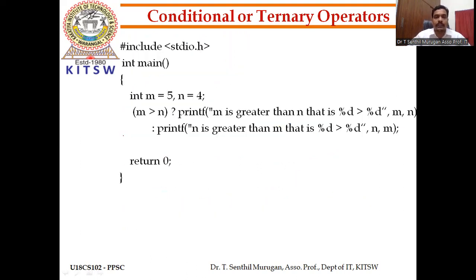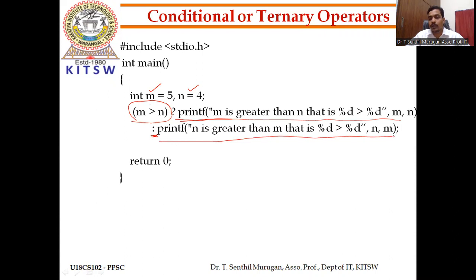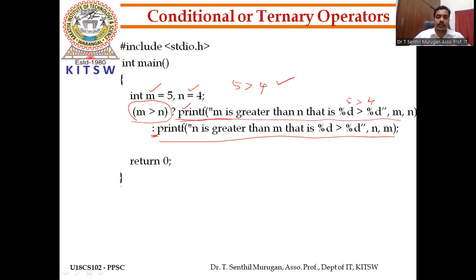Here is an example: m equals 5, n equals 4. Using the ternary operator — check the condition, then question mark. If condition is true, the first statement (before colon) works; if false, the second statement works. Since 5 is greater than 4, the condition is true, so it prints 'm is greater than n'.